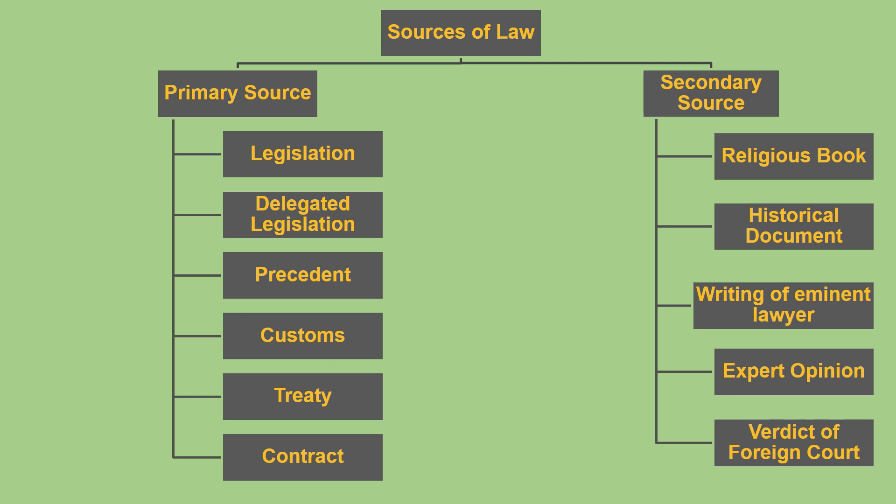In primary source, Parliament-enacted law is legislation. It is not practical to put functional detail in Parliament-enacted law. That is why the act allows the executive, judiciary, or constitutional body to frame the rules, which we call delegated legislation.